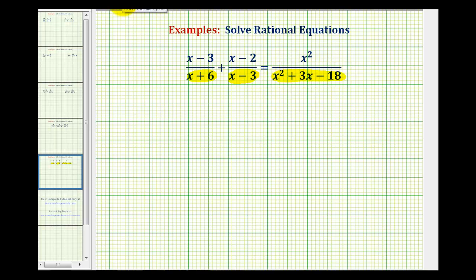So to determine the least common denominator, we do want to make sure the denominators are in factored form, so we'll start by factoring this. Factors of x squared are x and x.